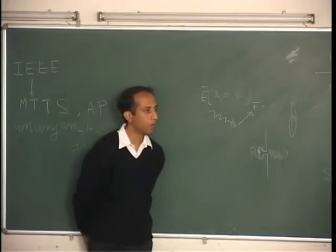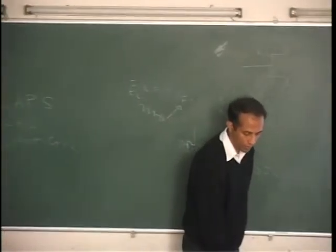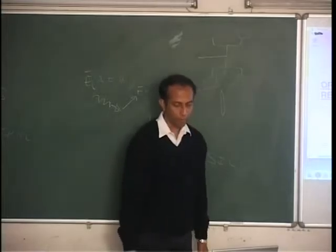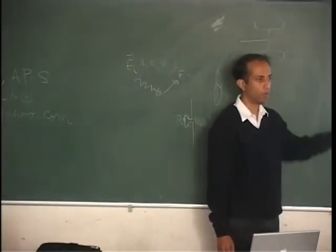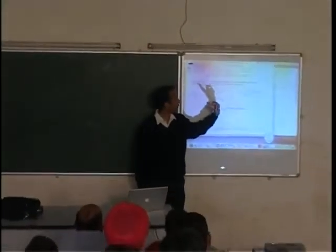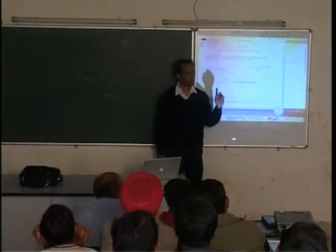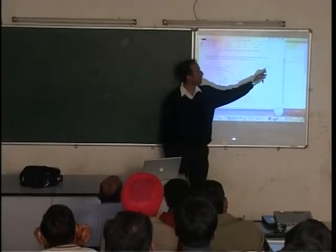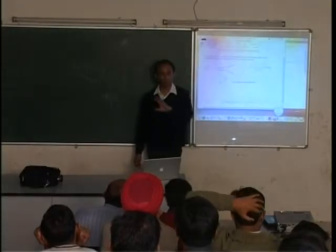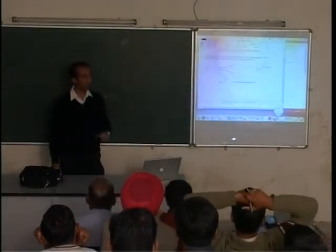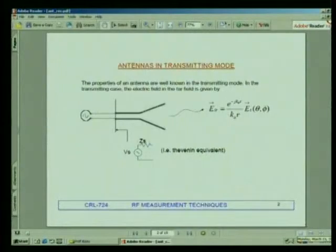Can we use the reciprocity theorem? Exactly — the reciprocity theorem is what is used. We know all about the transmitting mode. For any antenna in the far field, the fields have a specific form: the radial dependence and the θ–φ angular dependence are separable. The radial dependence is always the same — it goes as 1/R with a phase factor e^{−jk₀R}. The angular dependence differs for different antennas — narrow beam or broad beam is the θ–φ dependence. The radial dependence always follows an inverse square law for power.